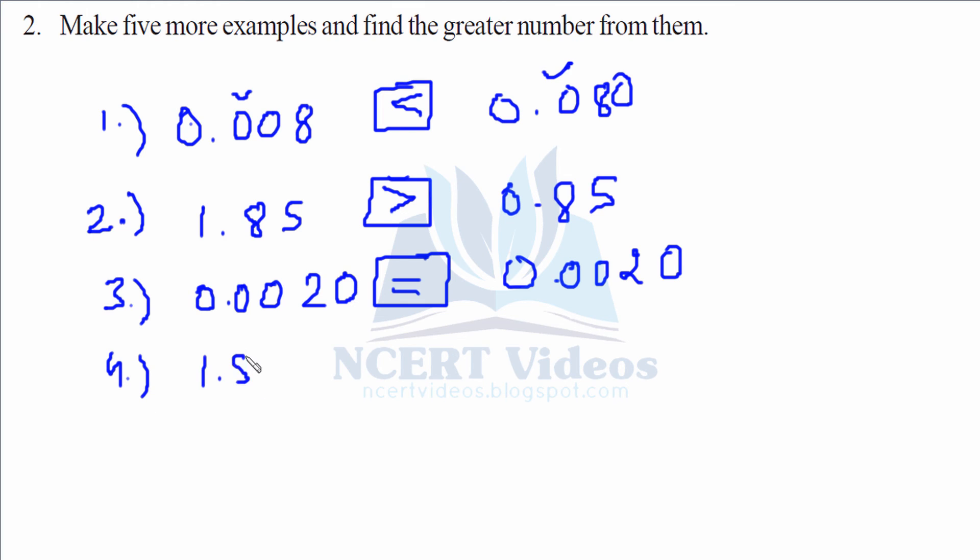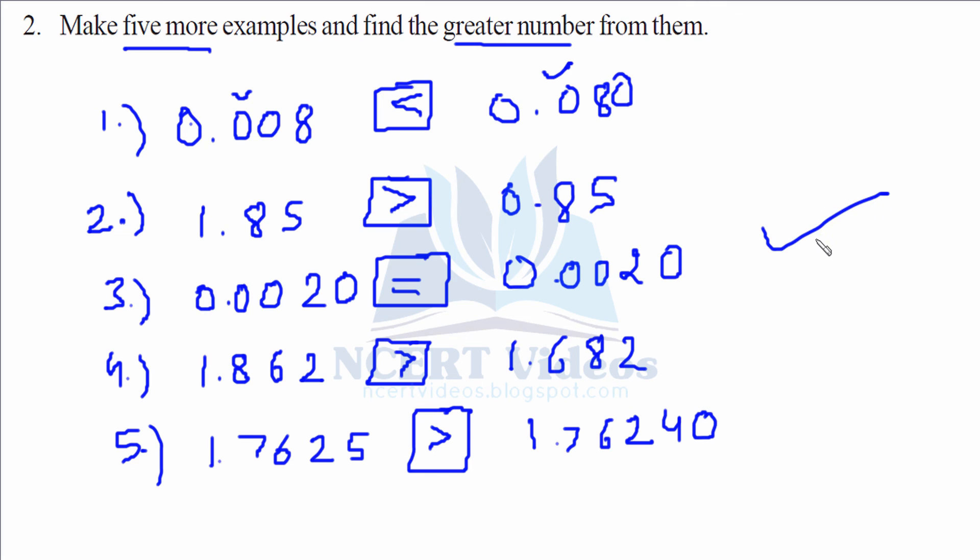Fourth: 1.862, let's compare it with 1.682. Here the tenths part is greater—8 compared to 6—therefore greater than sign. Fifth: 1.7625. In this way you can choose any examples that come into your mind. You just have to select them and compare the digits. That's your answer.